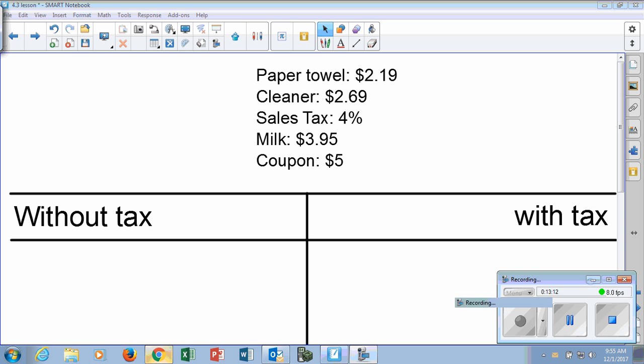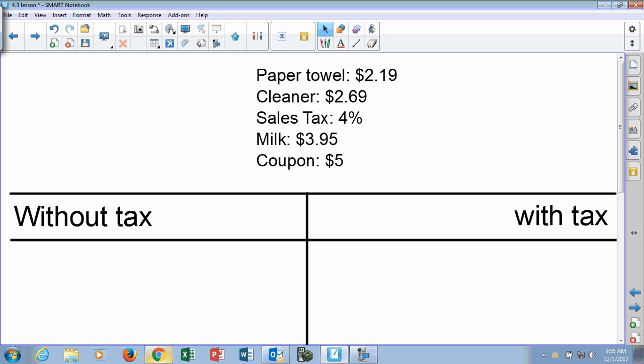Alright, let's talk about what we know from this scenario. Paper towel is $2.19. The cleaner is $2.69. He also bought milk at $3.95. There's a 4% sales tax. Plus he has a $5 coupon. So how did you come up with the answer, Aiden?